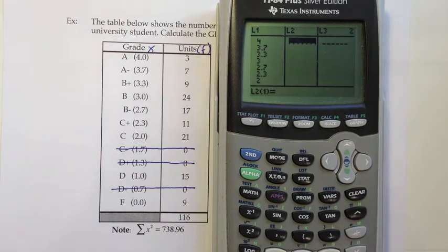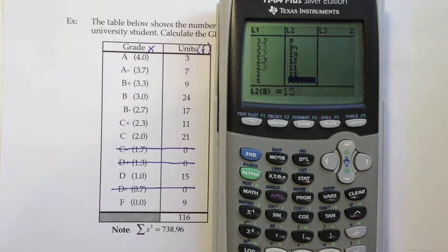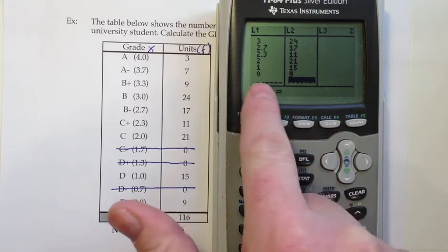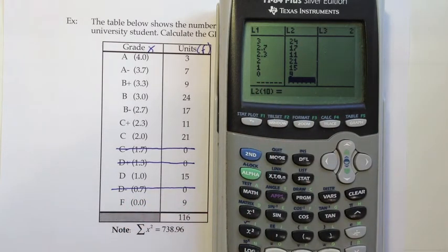And then I'm going to go over to list 2 and what I'm going to put there are the units. And if it was some other sort of group data problem I would put the frequencies. So I'll type those in. And just kind of note that I have the same length column. That's just a good quick check that I didn't miss anything obvious. And then again at this point I'm going to let the calculator take over and do the rest of the work.